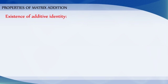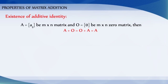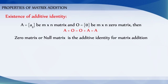Existence of additive identity: Let A equal to Aij be an M by N matrix and O be an M by N zero matrix. Then we get A plus O is equal to O plus A is equal to A. Therefore, the zero matrix or null matrix is the additive identity for matrix addition.